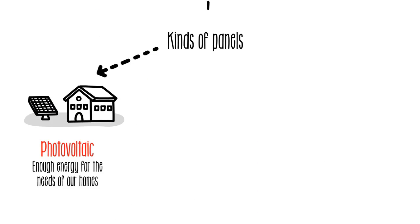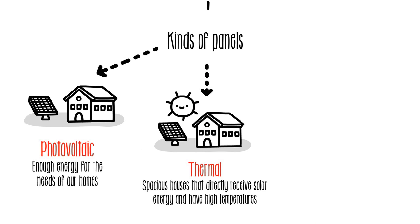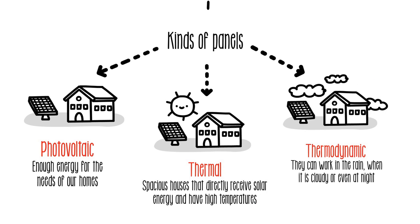Photovoltaic: They generate enough energy for the needs of our homes. Thermal: Spacious houses that directly receive solar energy and have high temperatures. Thermodynamic: Their main advantage is that they can work in the rain when it is cloudy or even at night.